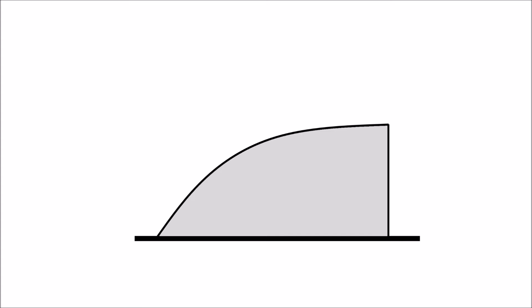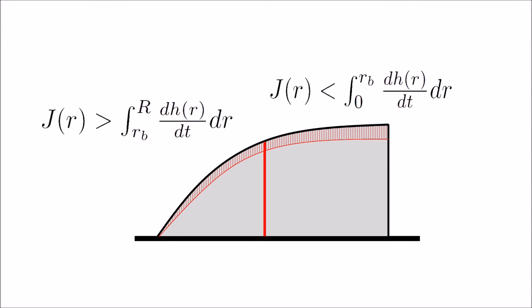Then, for a drop with a fixed contact line, there must be some distance from the center where any larger distance would have the volume of the drop decrease faster than the height of the drop can shrink. To compensate for this, liquid from the center flows outward, keeping the contact line pinned.